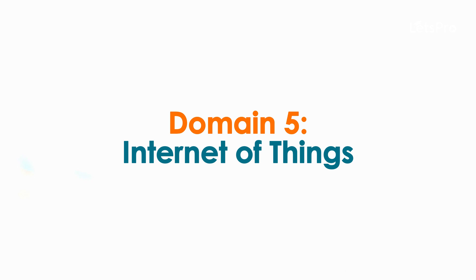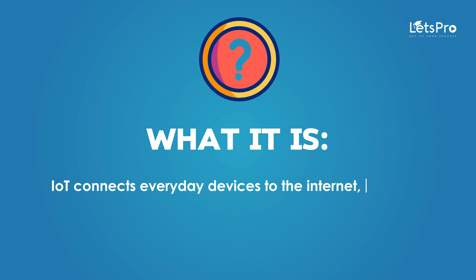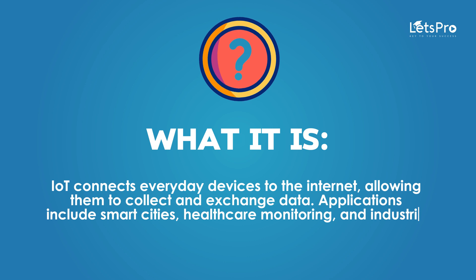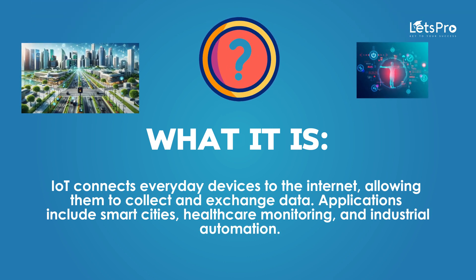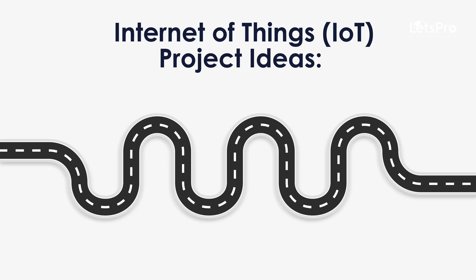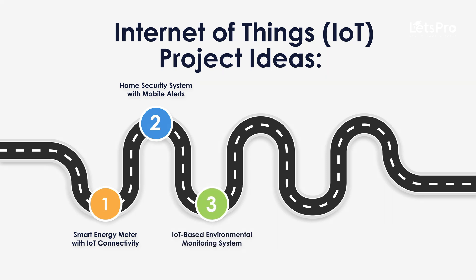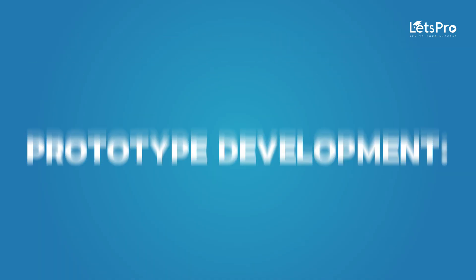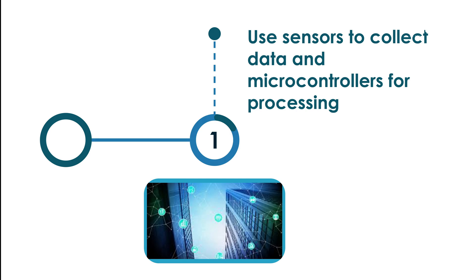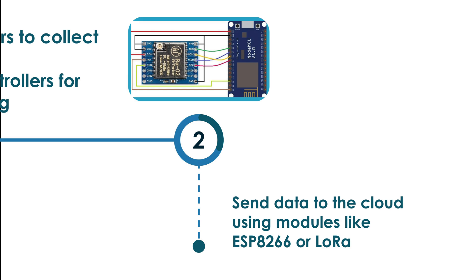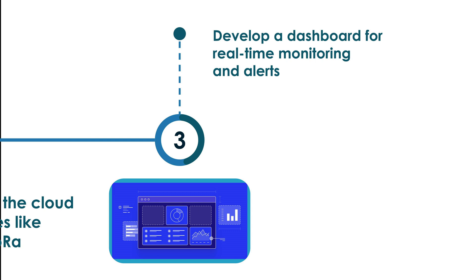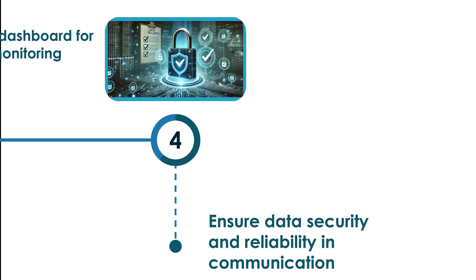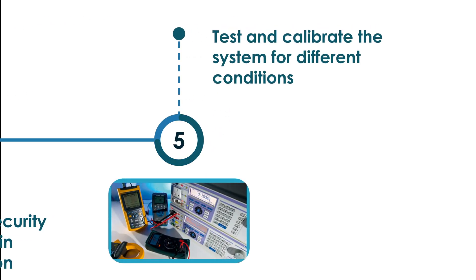Domain 5: Internet of Things (IoT). IoT connects everyday devices to the internet, allowing them to collect and exchange data. Applications include smart cities, healthcare monitoring, and industrial automation. Project ideas include: smart energy meter with IoT connectivity, home security system with mobile alerts, IoT-based environmental monitoring system, smart waste management system, and connected vehicle system for traffic management. For prototypes, use sensors and microcontrollers for data collection and processing, send data to the cloud using modules like ESP8266 or LoRa, develop a real-time monitoring dashboard, ensure data security, and test under different conditions.